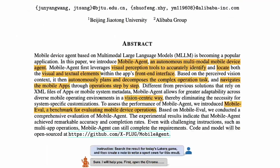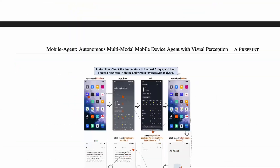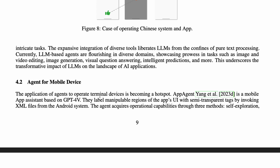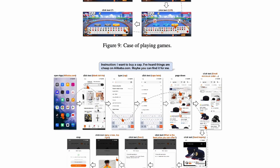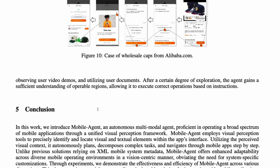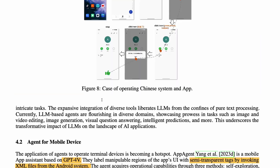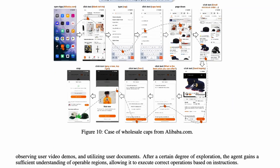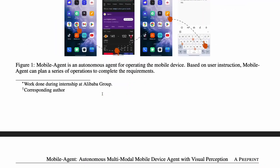What makes this system different from others is that it is purely visual — it does not use any other information. Previous systems built using GPT-4 Vision were able to manipulate app UI regions using semi-transparent tags by invoking XML files from the Android system. Unlike that, this is completely visual. This also raises the question of how it compares with the LAM (Large Action Model) that Rabbit R1 claims to have. It's suggested this might generalize much better than what Rabbit claims.